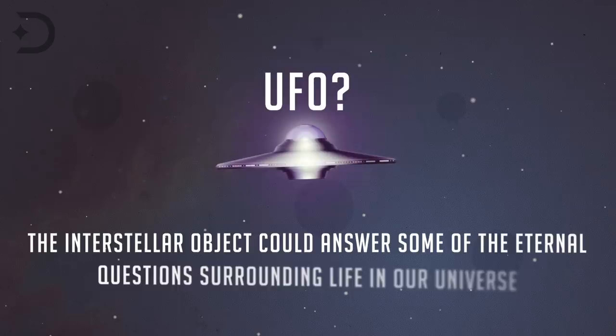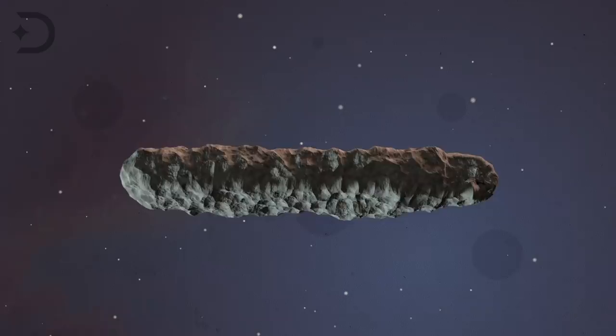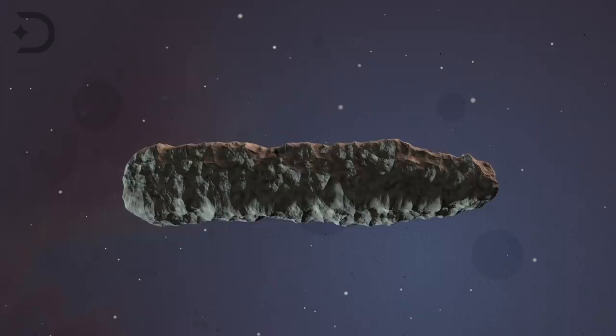Oumuamua has had some zany theories as to what it is and where it came from. But one of the most interesting things about this space rock was its highly unusual oblong shape that had many people saying it looks like a giant cigar.